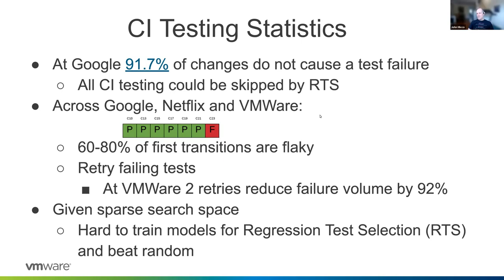Given that this is a really sparse search space — 92% of changes won't have a detectable problem — it's very hard to train models for regression test selection. Early efforts were fraught with peril. We made one that looked at the history of a test, pass and fail, and prioritized tests that transitioned more. But we ended up prioritizing tests that were highly flaky, which didn't give any good signal about catching real problems. It's hard to train and verify these models, and even when machine resources are flexible, you need to limit resource consumption.